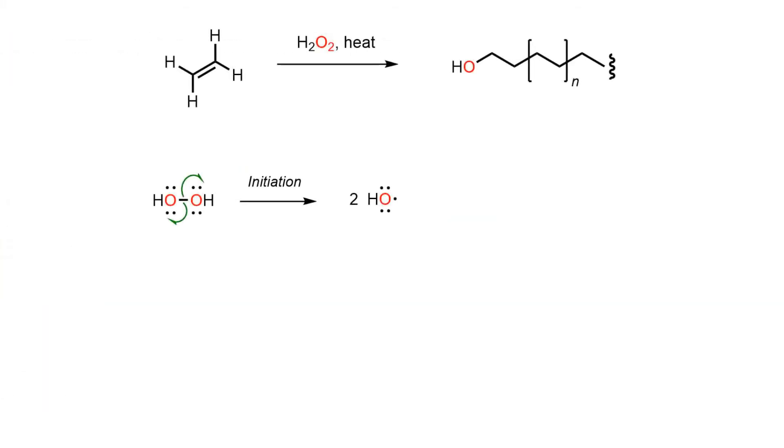Peroxides are unstable due to their weak oxygen-oxygen bond, so when they are heated up, they undergo homolytic cleavage and break into two reactive hydroxy radicals that then need to find something to add to.